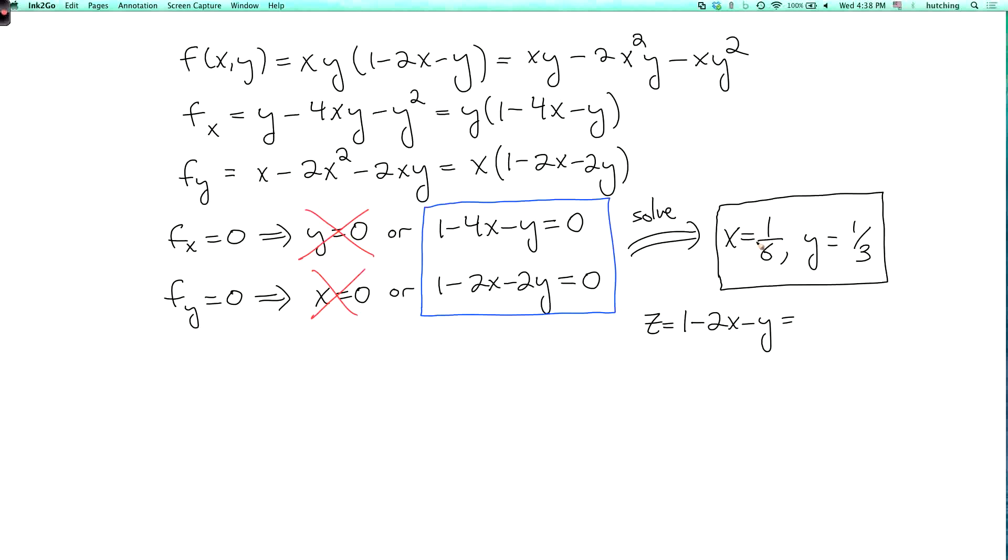So when we plug in x equals 1/6 and y equals 1/3, we get z equals 1/3. So the volume, and this is the maximum volume, is x times y times z, which is 1/6 times 1/3 times 1/3, which is 1/54. And this is attained where x equals 1/6 and y and z are both equal to 1/3. So now if you ever need to store stuff in an attic, you have the mathematical tools to optimize this process.